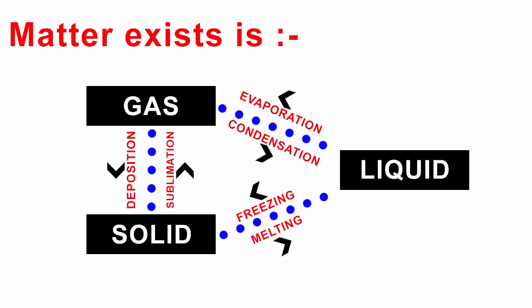In both examples, temperature and pressure played an important role. Therefore, with right temperature and pressure conditions, a matter can exist in solid, liquid, or gas state.